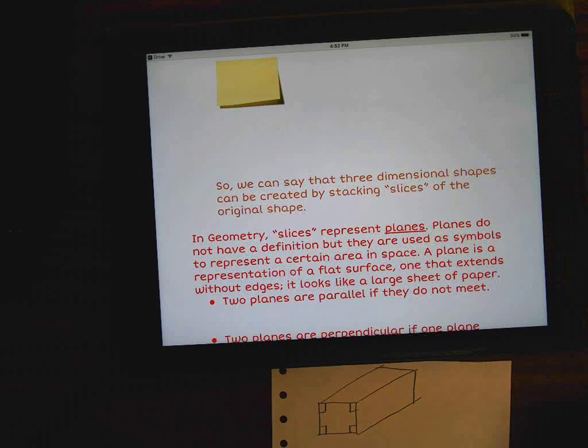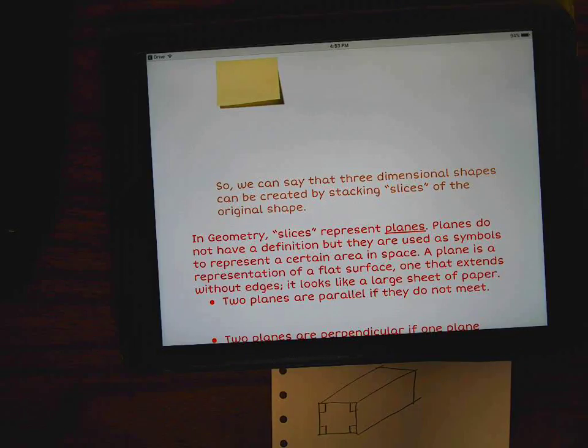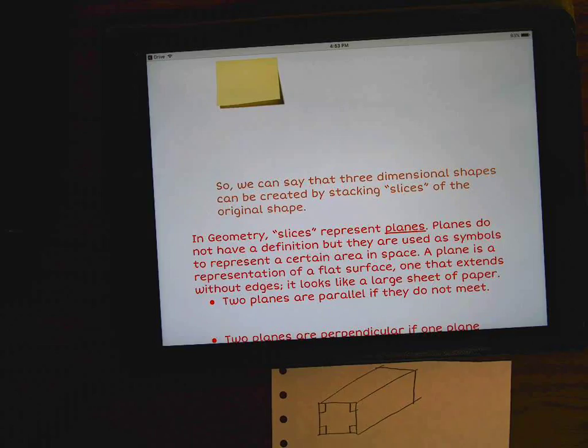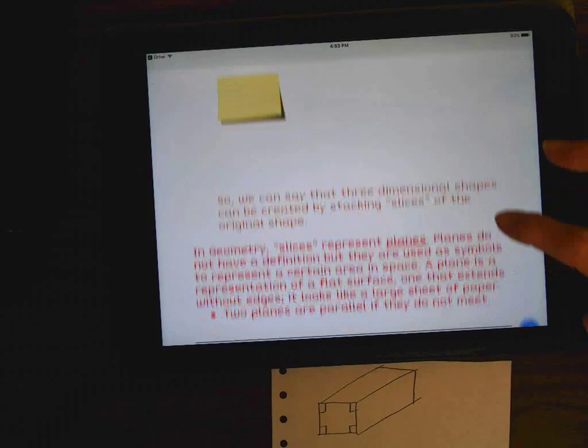So in geometry, slices represent planes. Let me say that again. In geometry, slices represent planes. So again, we're not talking about the thing that flies. We're talking about the individual planes that they stack on top of each other, and one after the other gives us depth, and it turns into a three-dimensional shape. Planes do not have a definition, but they are used as symbols to represent a certain area in space. A plane is a representation of a flat surface, one that extends without edges forever. A lot of people think of a plane in geometry like a piece of paper.